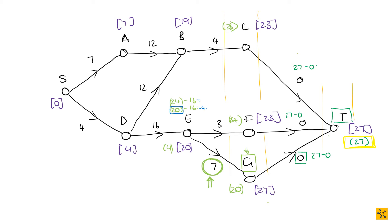Just a reminder: when you're working out these calculations, you look at all the arcs radiating out of that vertex, you look at their latest start times, you take the smallest of those, and then you subtract the weight of the edge radiating in towards that vertex. So let's move on and go to B. B is 23 minus 12, which gets us 11. So B's latest start time is 11.